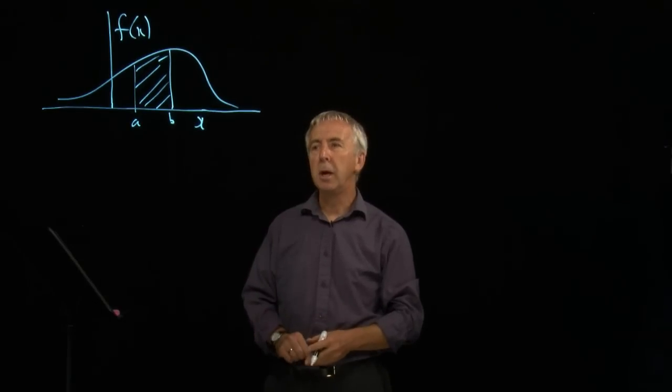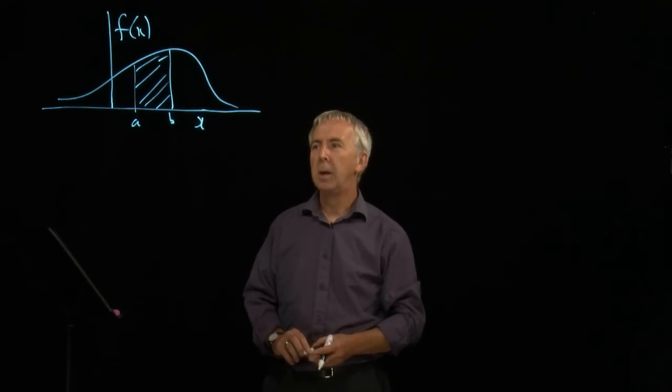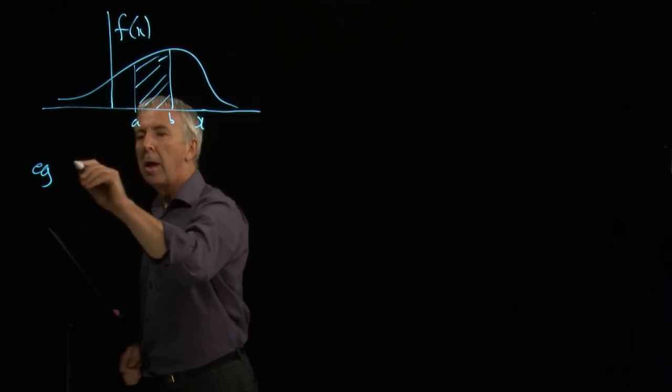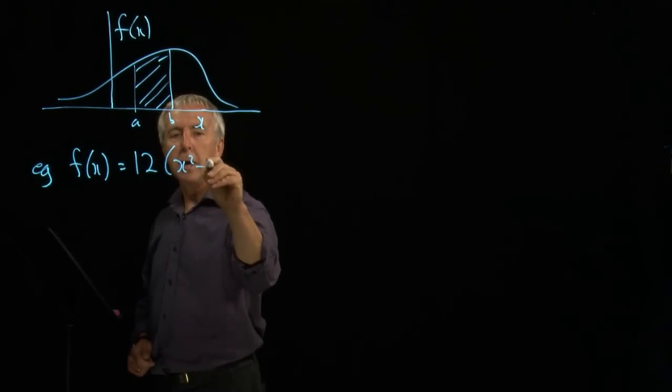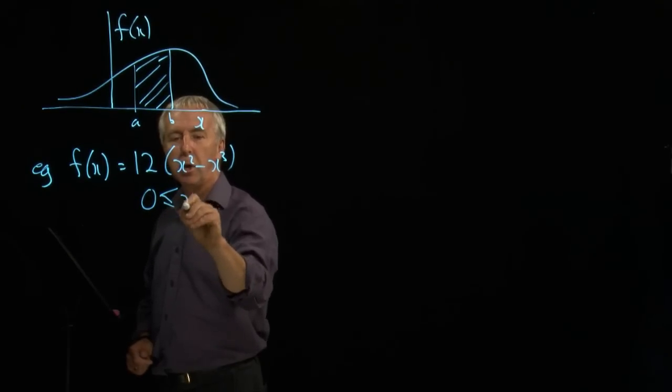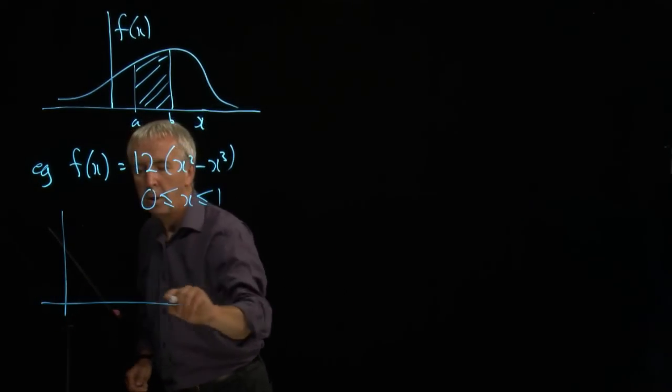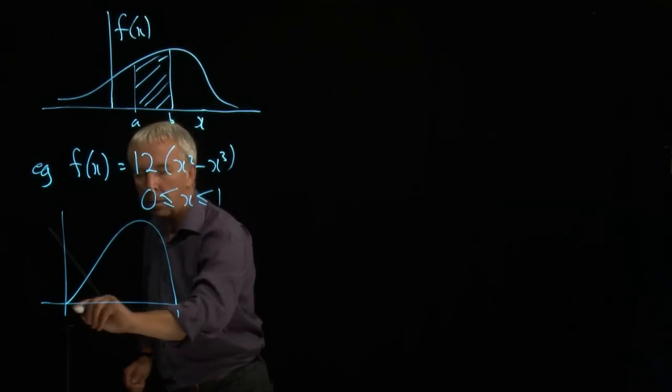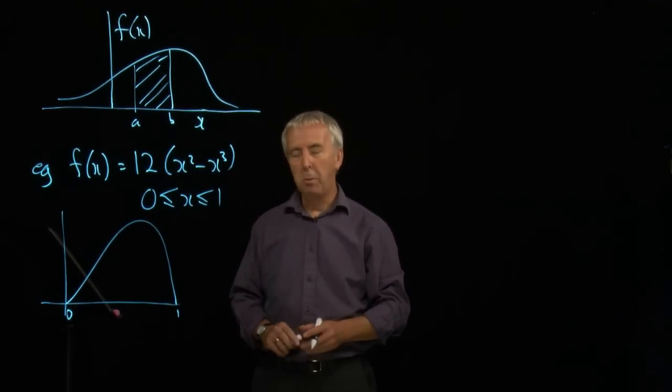The total probability is 1, and so the total area under such a graph has to be 1. An example of this is f(x) = 12(x² - x³) with x ranging from 0 to 1. That has a graph looking a bit like this. It's slightly lopsided and it goes from 0 to 1. The area is 1. That represents a probability.